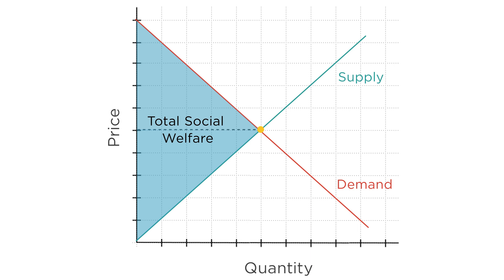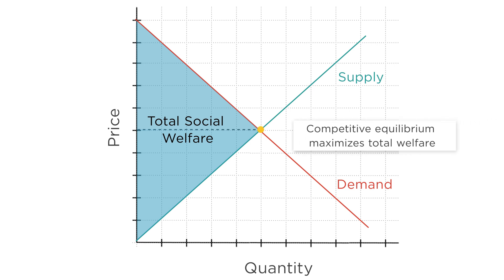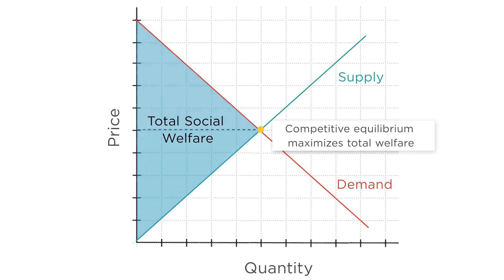From this starting point, we can get to the most important conclusion in the Welfare Economics section of this course. The competitive equilibrium, where supply equals demand, will be the point that maximizes total welfare. Producing more or less than this amount lowers the total size of the welfare pie.